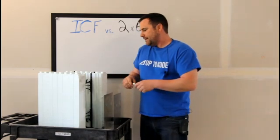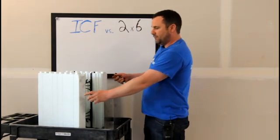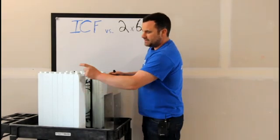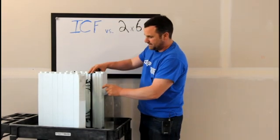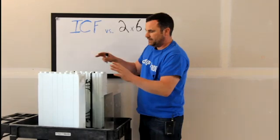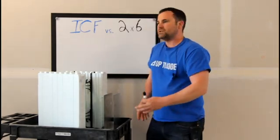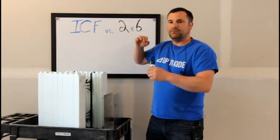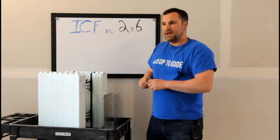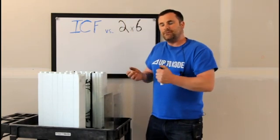A simple ICF wall has continuous EPS insulation on both sides, you fill it with concrete, you're done. Some people think you only do your basement with it, but why not just go one step further and do the main floor? Then you have a house that's disaster-proof, tornado-proof, with a four-hour fire rating.